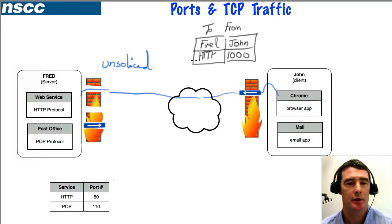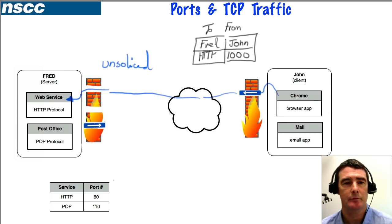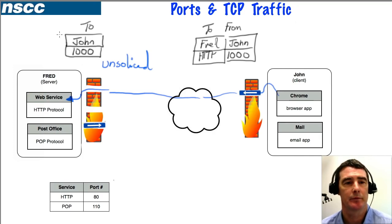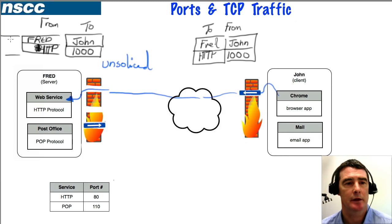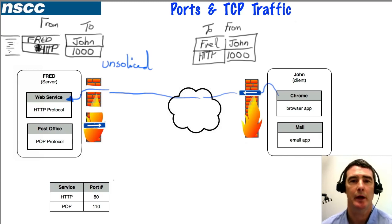The firewall uses the port information — HTTP — to determine this is for the web service and directs it to that piece of software. Fred processes the request for a web page and generates a return packet. The to field of the return packet is addressed to John, since that's where the request came from, and it goes to port 1000, which is the application that requested the information. It's coming from Fred, from HTTP. The rest of the packet contains the actual data — web pages, graphics, and all that information.